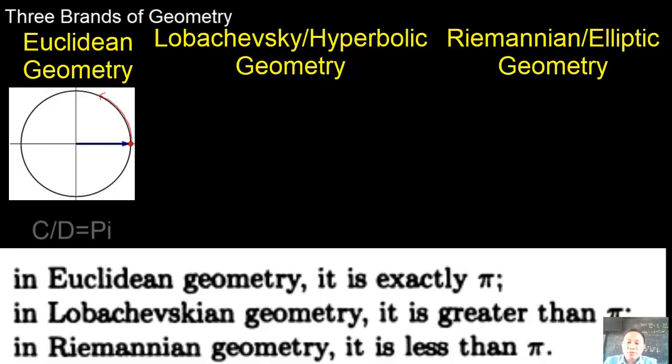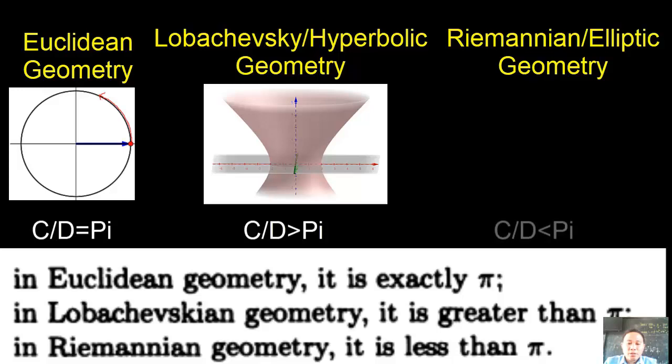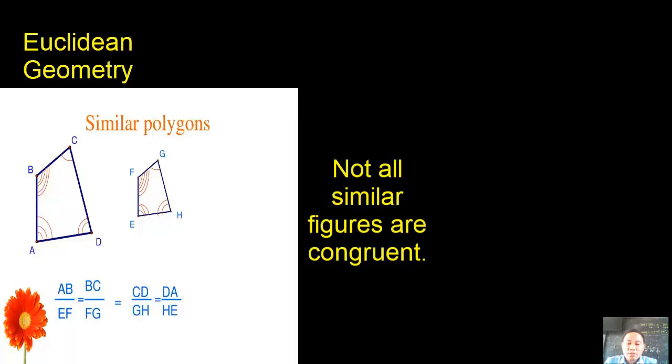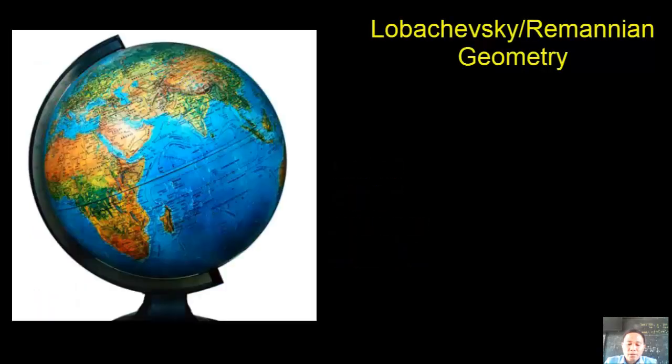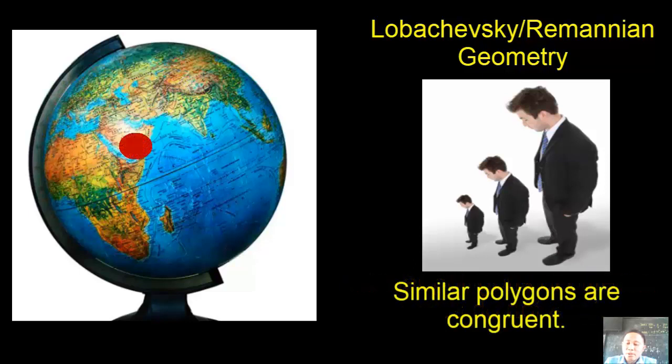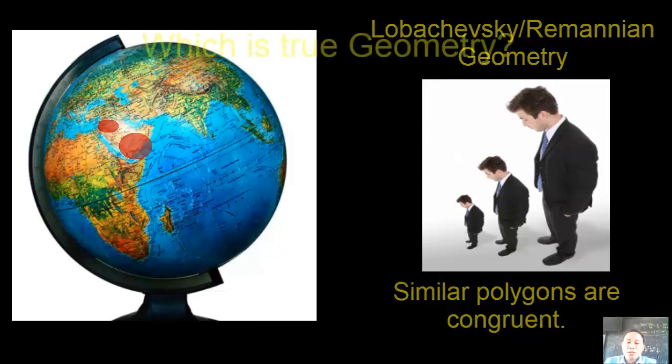In terms of the ratio of circumference and diameter, in Euclidean it equals pi or 3.1415 and so on. But in Lobachevsky, it is greater than pi. And in Riemannian geometry, it is less than pi. Lastly, in Riemannian geometry, polygons with different area can be similar because not all similar triangles are congruent. But in Lobachevsky, similar polygons of different areas do not exist because similar polygons are congruent. It means looking at this figure, if a person is here and they get farther away, they get smaller, and farther still, they get smaller. Similar polygons are congruent.